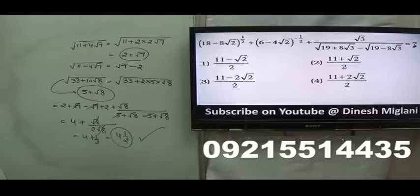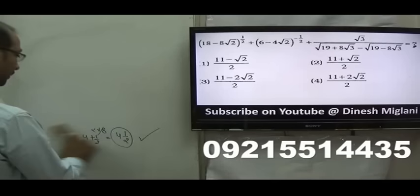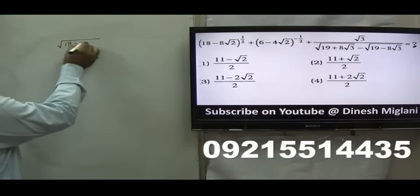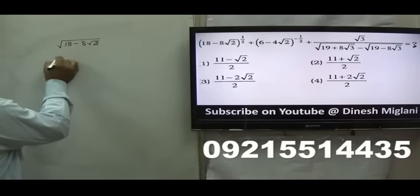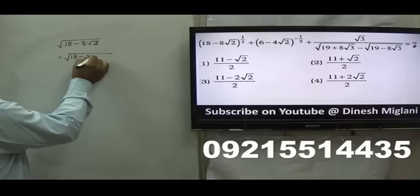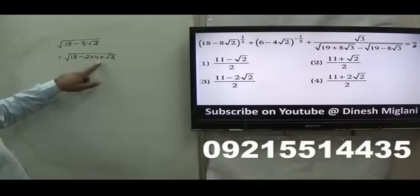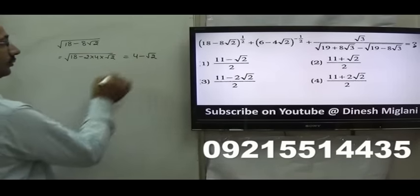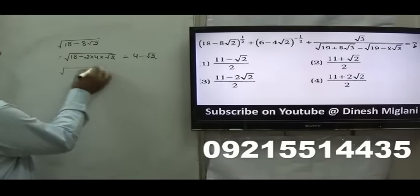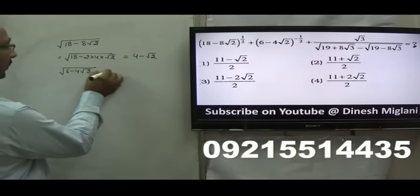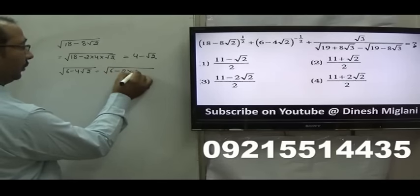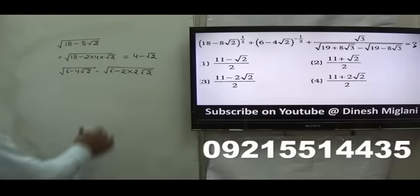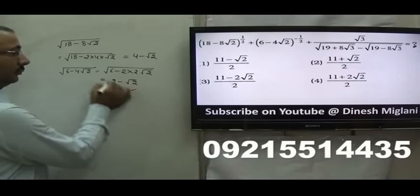Next question, a similar type problem — we just complete the squares and find the square roots. First term is √(18 − 8√2). I take it as √(18 − 2·4·√2). Here 4² = 16 and (√2)² = 2, so 16 + 2 = 18. That gives 4 − √2. Second term, √(6 − 4√2), taken as √(6 − 2·2·√2): 2² = 4 and (√2)² = 2, so 4 + 2 = 6, giving 2 − √2.